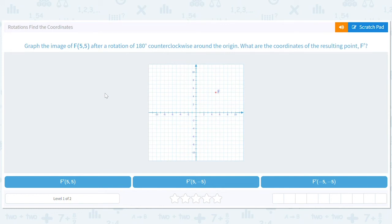We're back in geometry and we are dealing with these cool graphs that you know I love and we're doing rotations and finding the coordinates. So graph the image of 5, 5 after a rotation of 180 degrees around the origin. What are the coordinates of the resulting point?